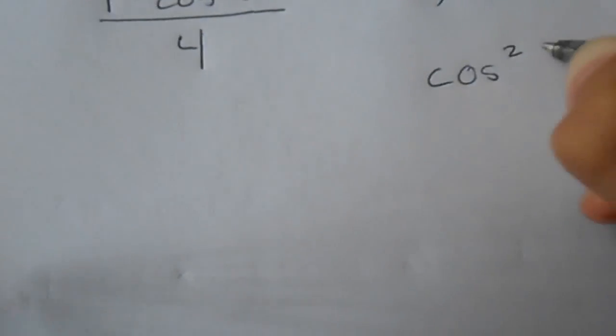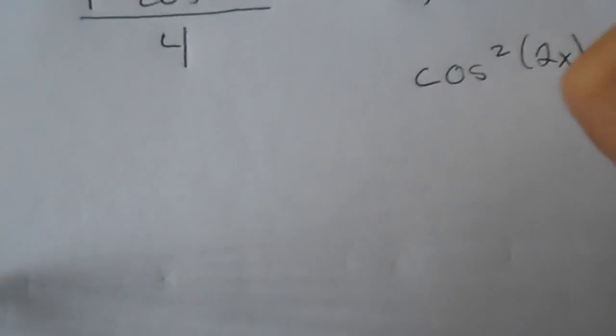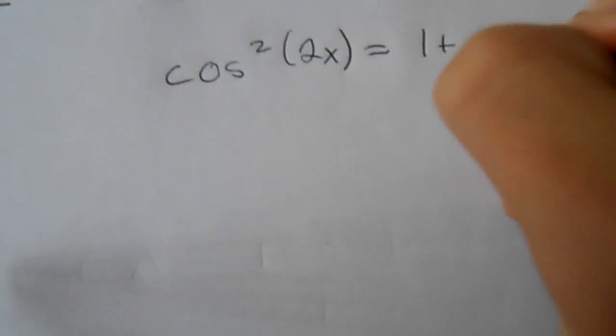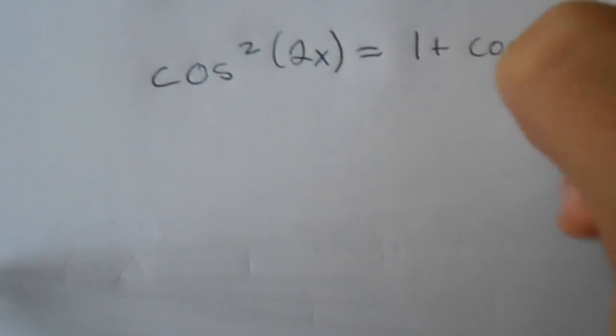So for this one, cos²(2x) equals (1 + cos(2·2x))/2.